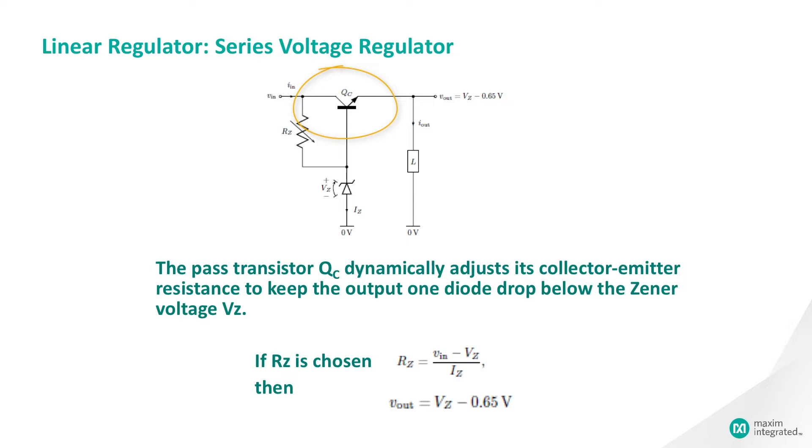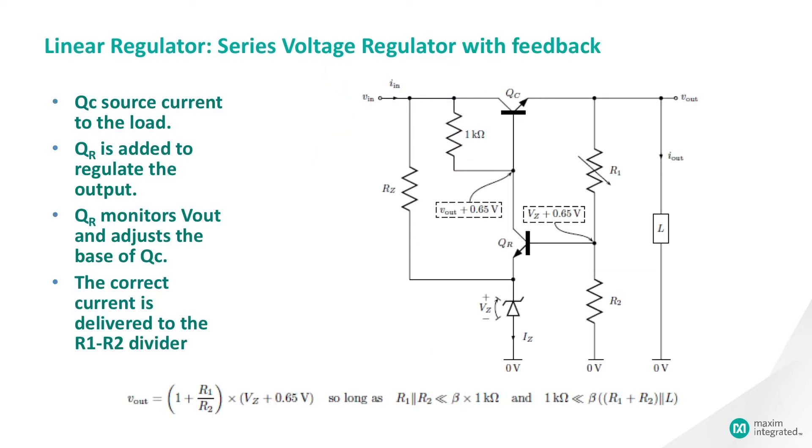This regulator is classified as series because the transistor regulating element, QC, appears in series with the load. QC sources current to the load. QR is added to regulate the output. QR monitors Vout and adjusts the base of QC. The correct amount of current is always being delivered to the R1-R2 divider to keep the output at the desired value.